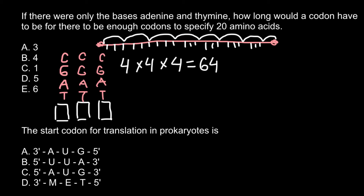Now when you know this, it will be much easier to solve the problem. In our problem it is stated: what would happen if we had only adenine and thymine, or two bases? Let's put one position in the codon — we have only two bases, adenine and thymine. With only one position, we can code for only 2 amino acids. We need to code for 20, so let's add one more position. With the same two bases, 2 multiplied by 2 gives us 4 combinations — still not enough.